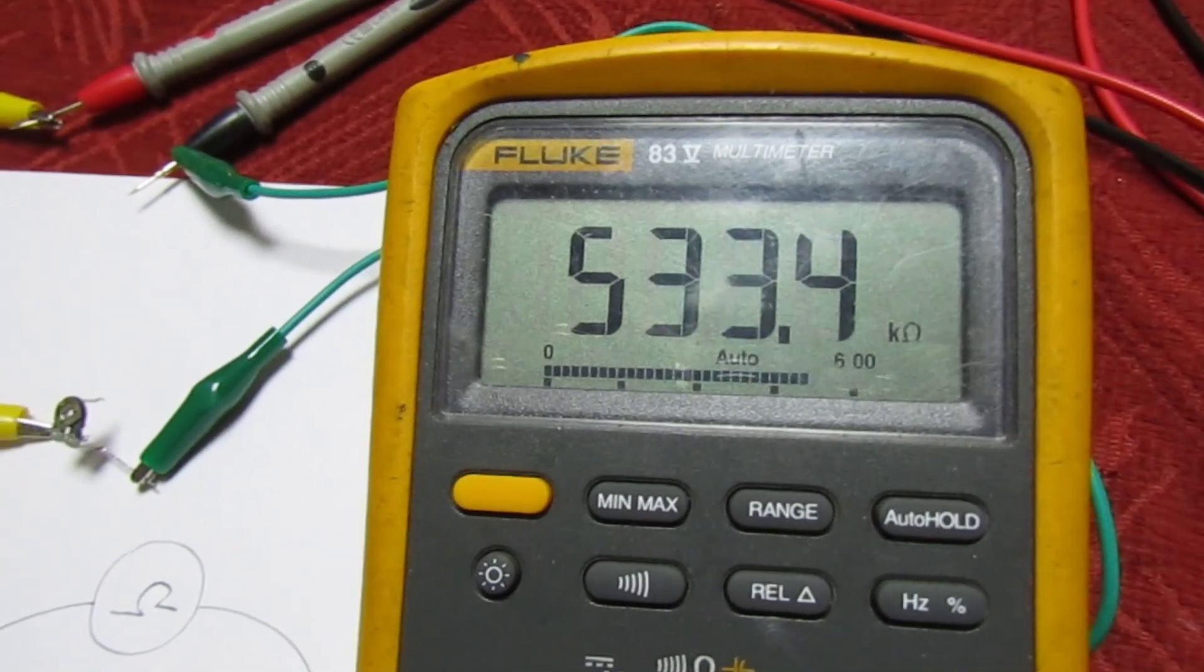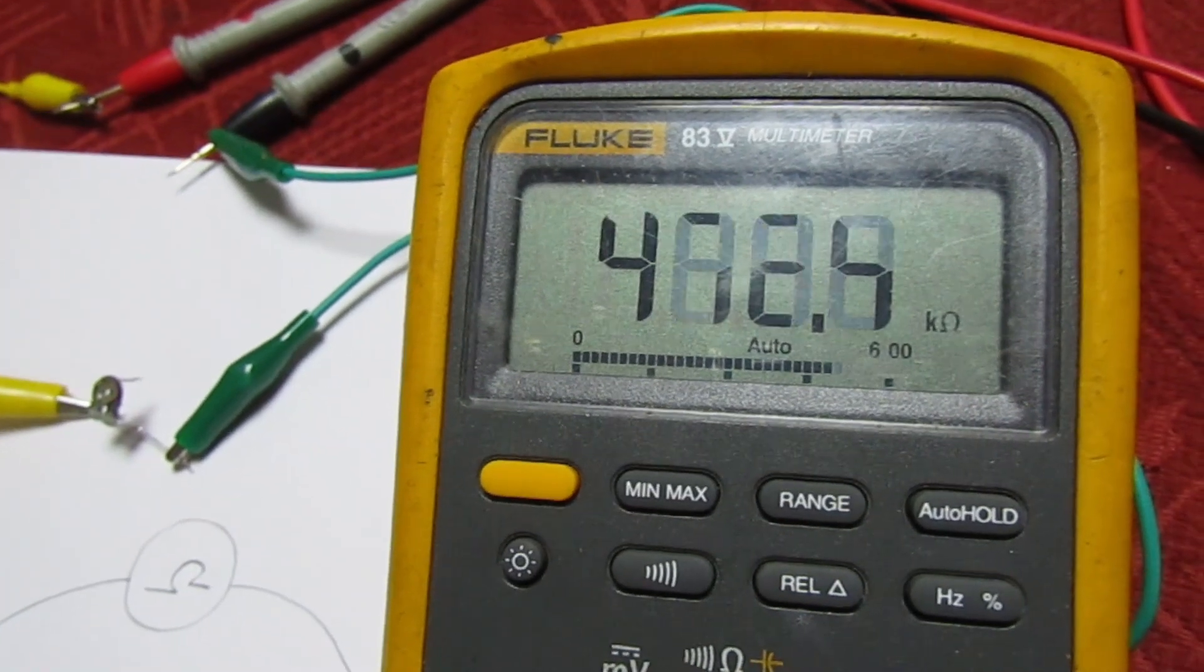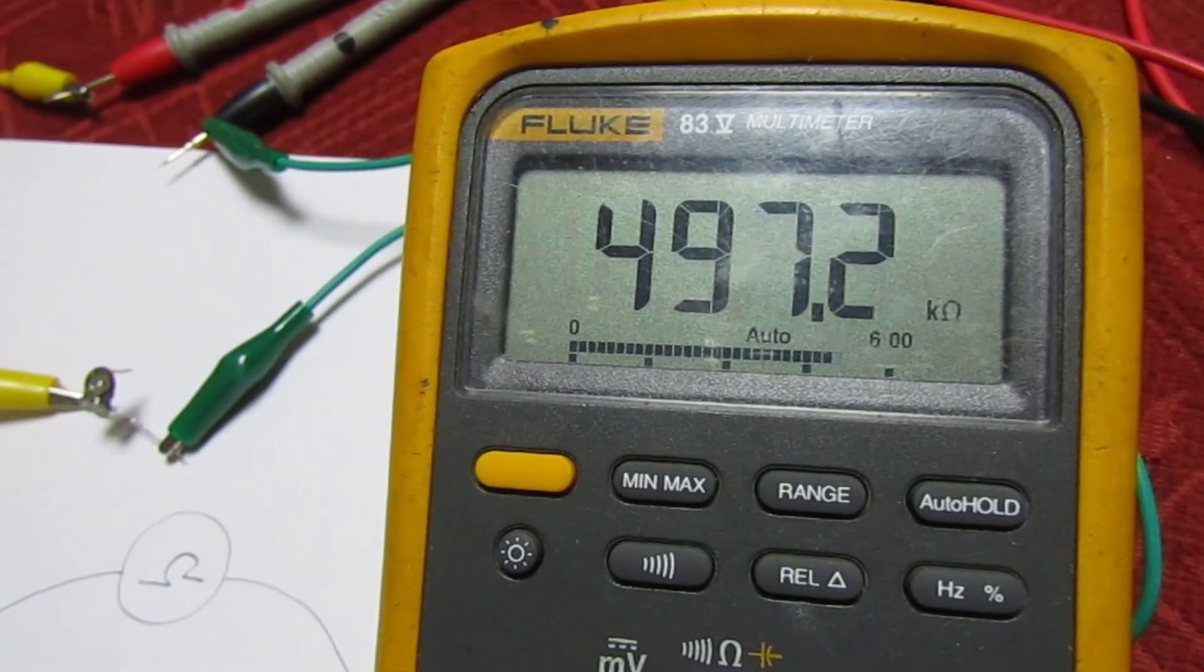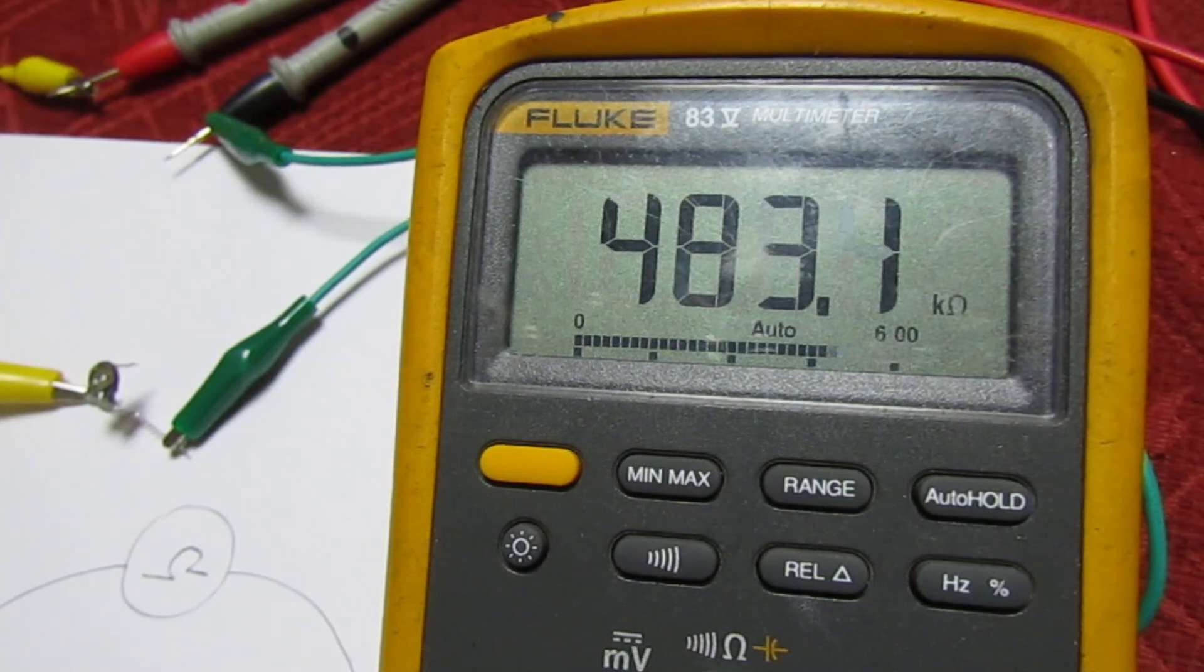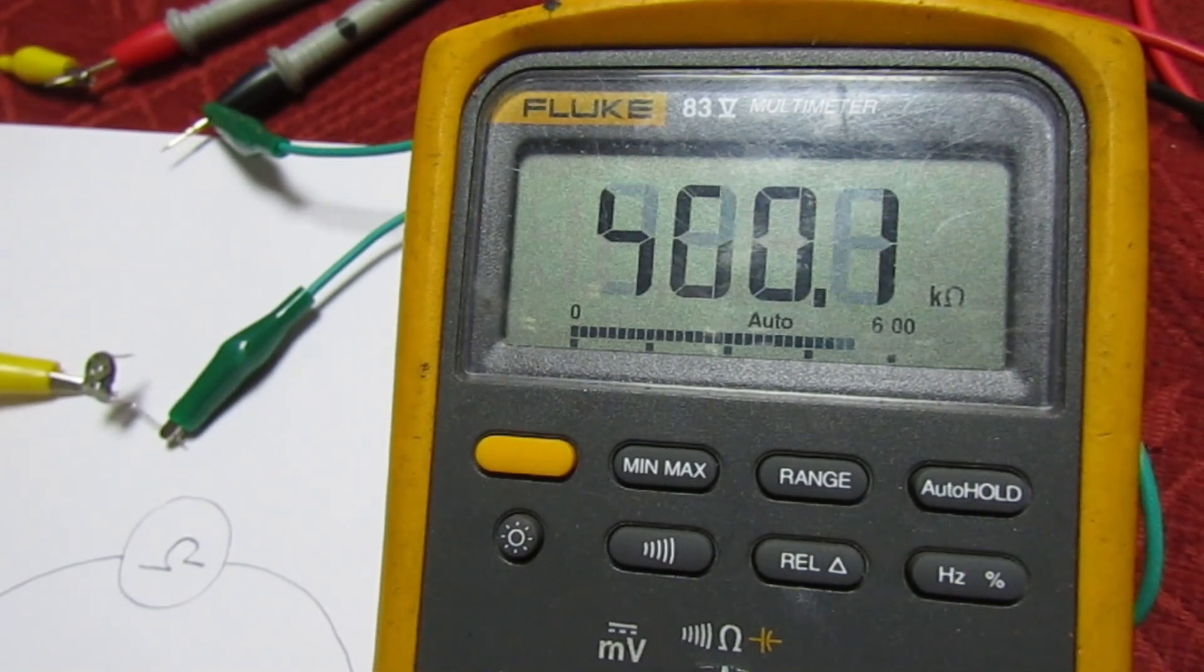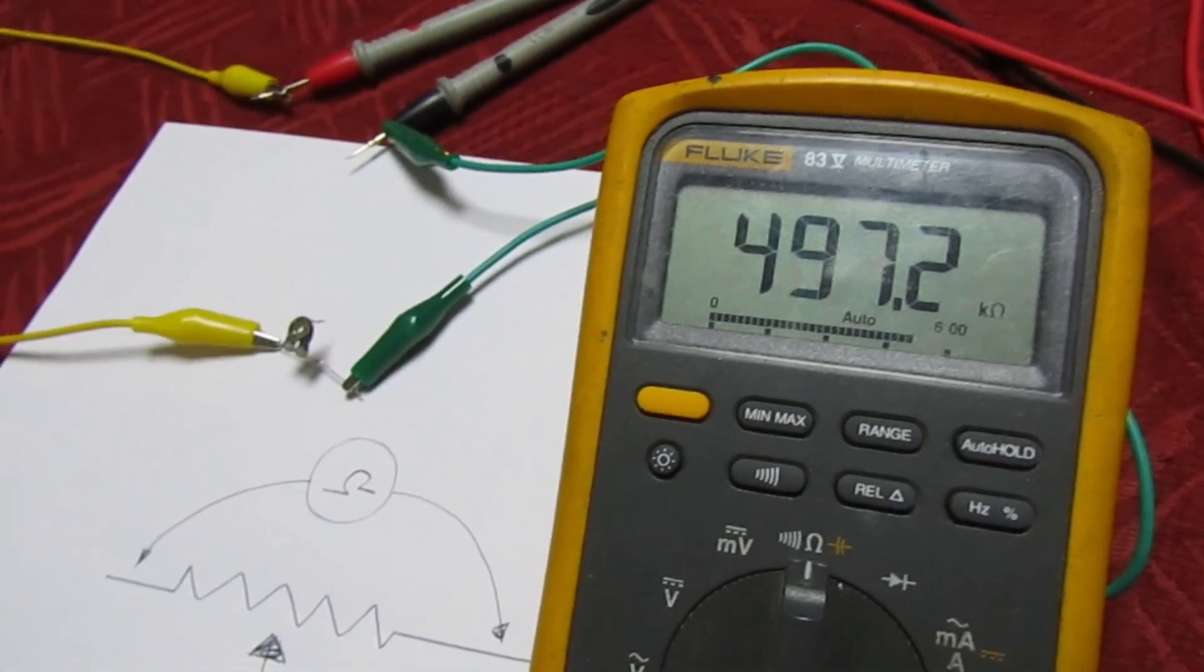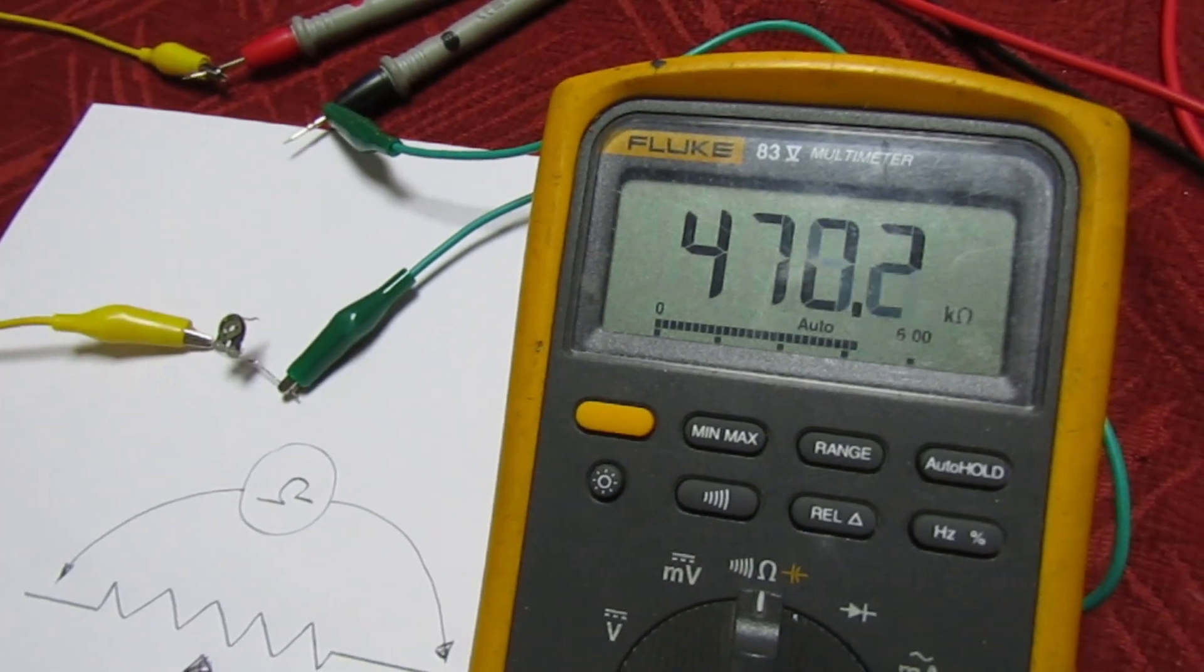Now look at that, the resistance is just changing at random all on its own. So what we got there, 500... But you can see that it's just completely changing the resistance on its own.